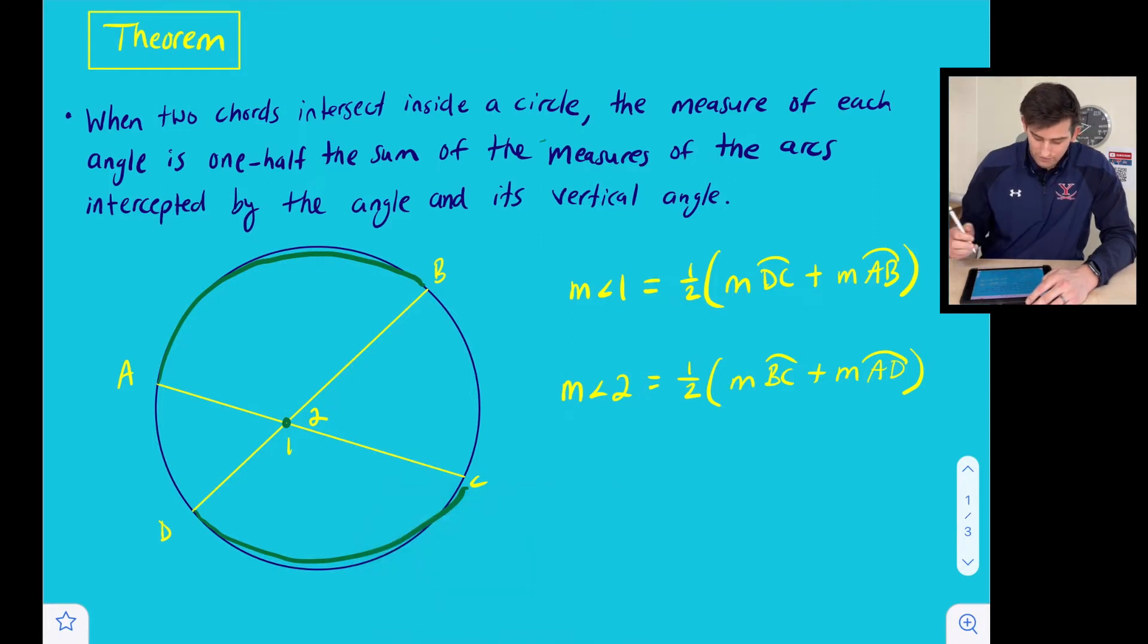And now for angle two, we're going to take one half of its intercepted arc, which would be BC, and then the intercepted arc of its vertical angle. So the vertical angle for angle two would be right here, and so the intercepted arc for that angle would be arc AD.